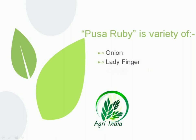Next question: Pusa Rabi is a variety of — options are onion, ladyfinger, tomato, and none of these. There is a similar-sounding onion variety called Pusa Red, but it is not Pusa Rabi. Ladyfinger varieties include Varsha, Uphar, and Parbhani Kranti, but Pusa Rabi is not among them. Pusa Rabi is a variety of tomato. The correct option is tomato.